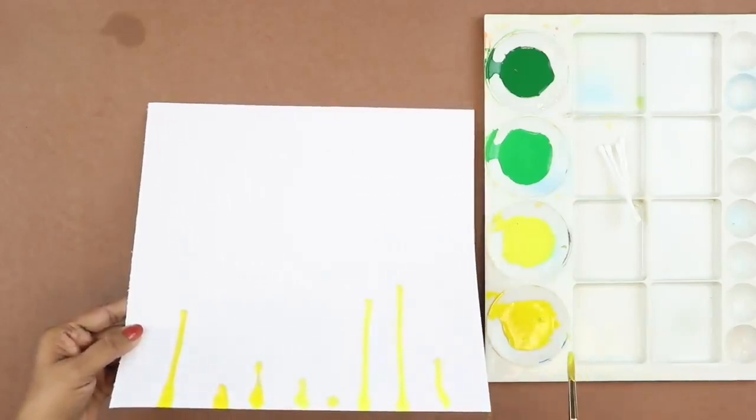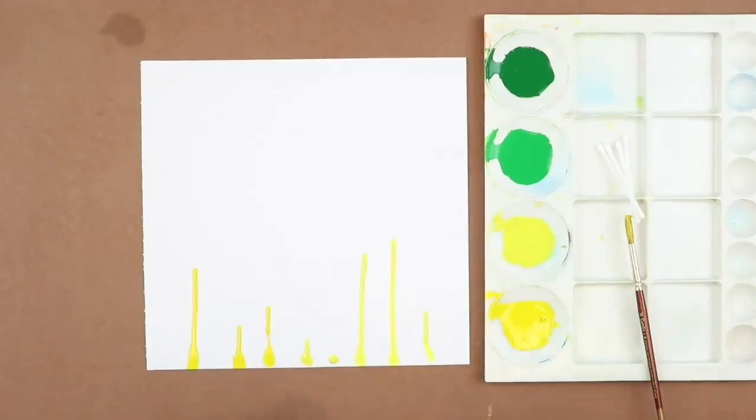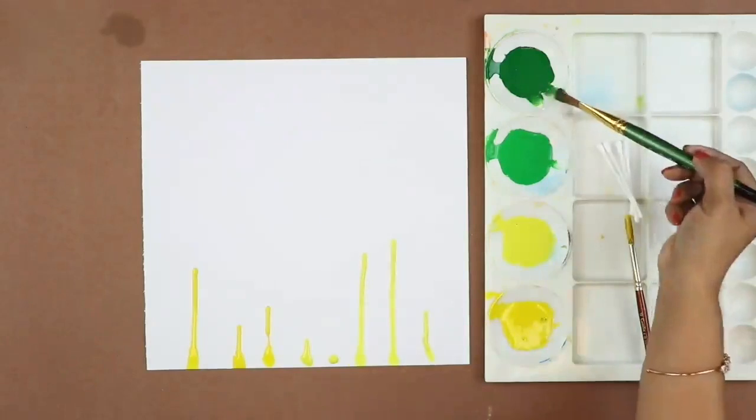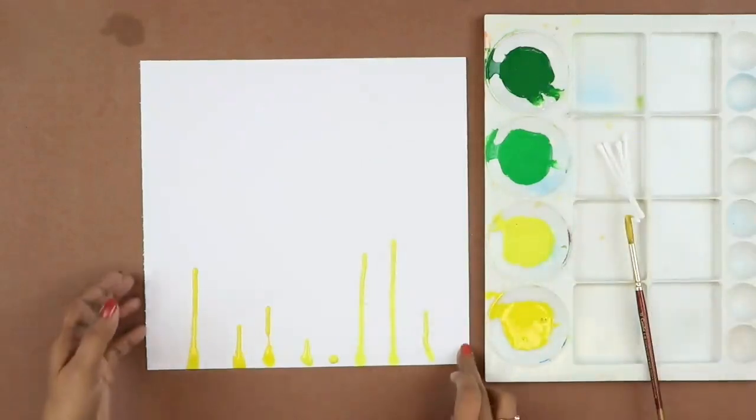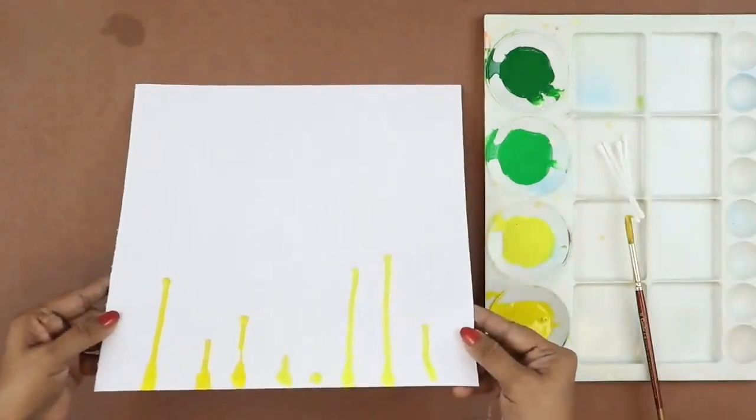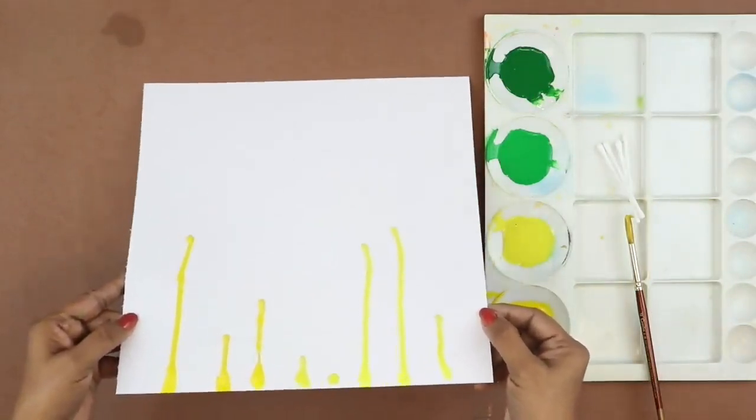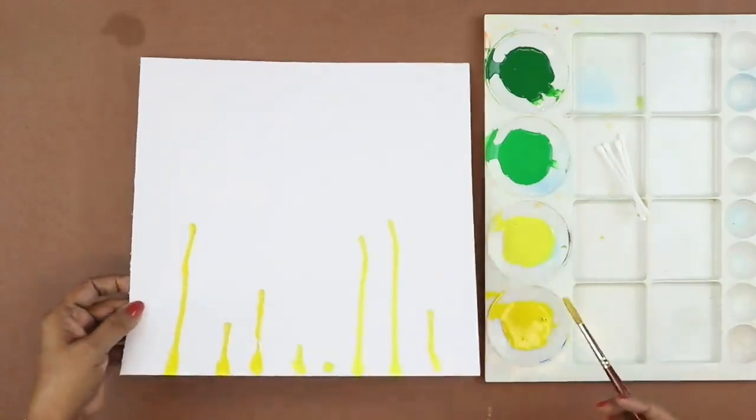Use different shades of yellow. Make sure that your paint is watery enough so that our colors can drip down very easily. Let it run unevenly on your paper.